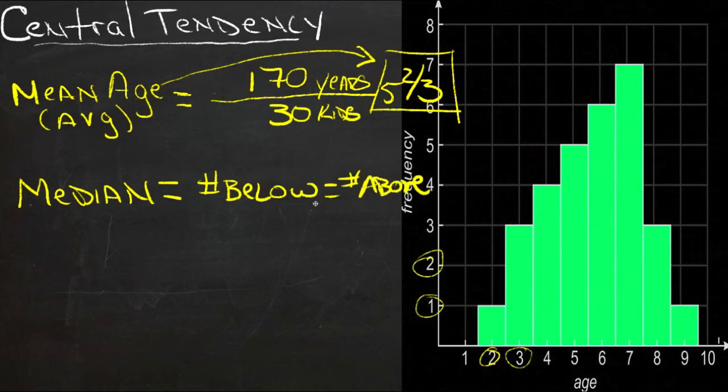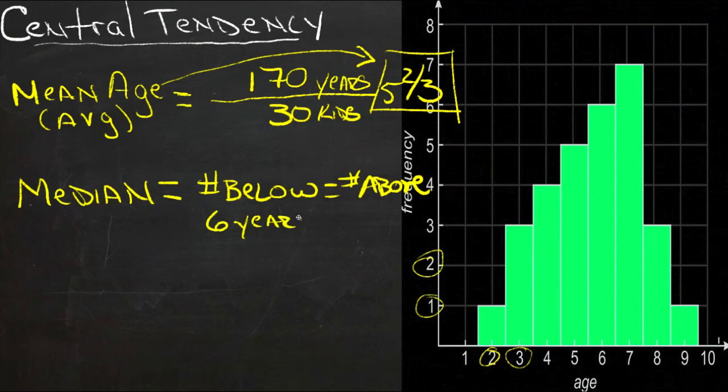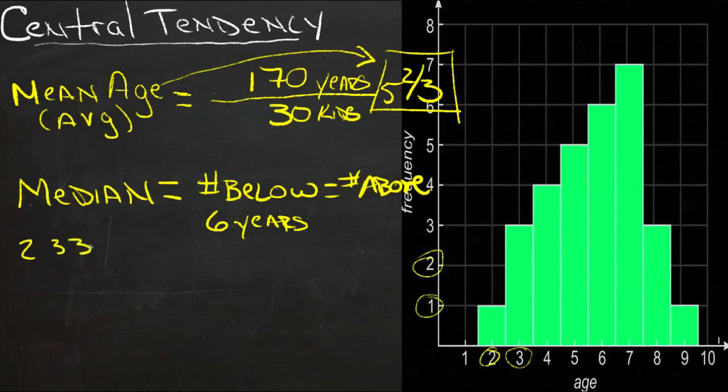So in this case, between the 15th and 16th oldest, we have 6 years. So if we lined up all these ages, we went 2 and then 3, 3, 3, and 4, 4, 4, 4, and so on,